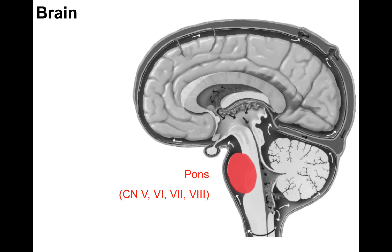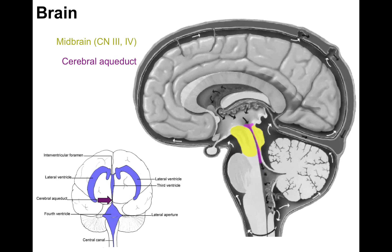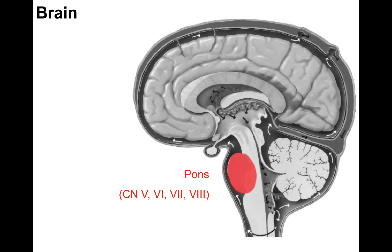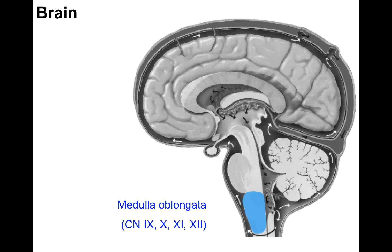The pons is the next caudal brainstem segment, housing respiratory centers and the nuclei of cranial nerves V, VI, VII, and VIII. There is a segmental pattern: midbrain houses CN III and IV, pons houses CN V through VIII. The medulla oblongata continues with CN IX, X, XI, and XII. So the brainstem — midbrain, pons, and medulla — shows a segmental origin pattern for cranial nerve nuclei.